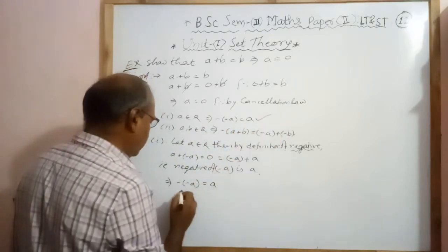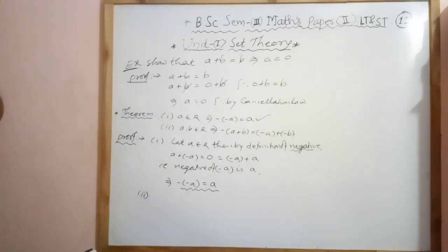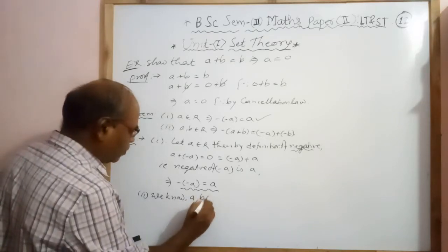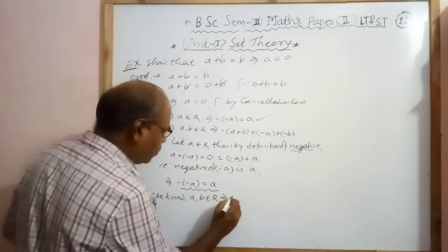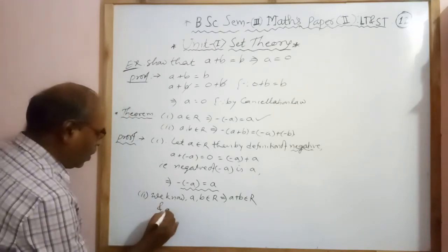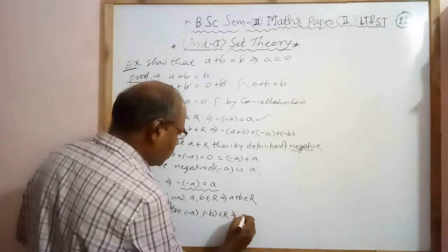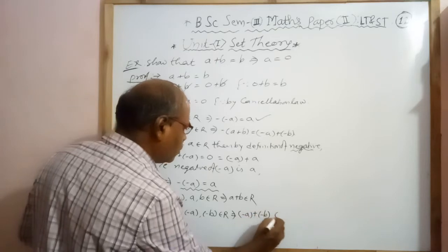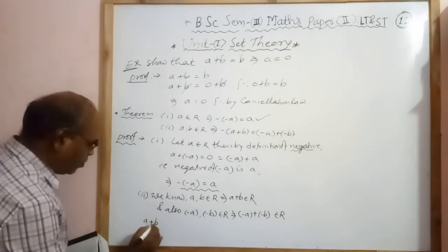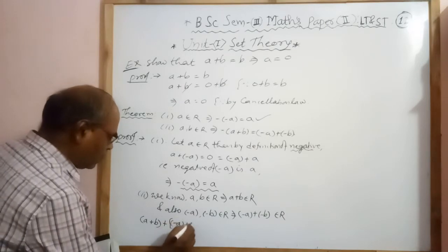Now the second proof. For A belonging to R, we have A plus B belonging to R by definition of real numbers. Also, minus A and minus B belong to R, and their sum minus A plus minus B also belongs to R. Now consider A plus B, plus minus A plus minus B.